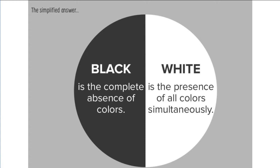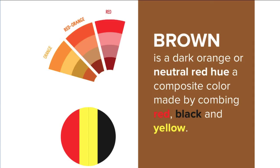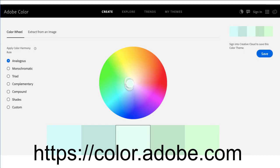Some people ask about where the browns are in the colour wheel. Brown is basically a dark orange or a neutral red hue — a composite colour made by combining red, black and yellow to generate the brown colours. This information helps us better understand how the colour wheel works. You'll notice that on the outer edge of the circle we have the hue, and as we move towards the centre we are adding a tint to it.